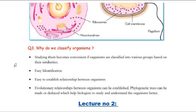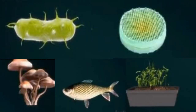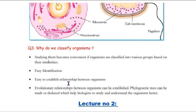Why do we classify organisms? If you have a box with all your jewelry — earrings, bracelets, necklaces, and pendants — they are all jewelry but in a disorganized form, so you can't identify things easily. But if you group them — necklaces together, pendants together, rings together — it becomes convenient. In the same way, we classify organisms so that we can conveniently study them and easily identify them.